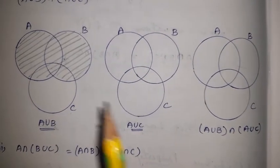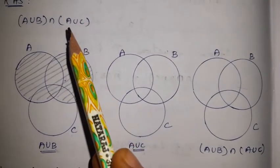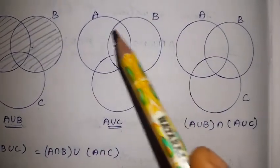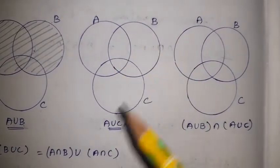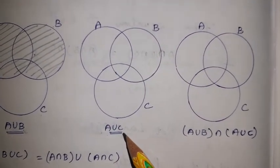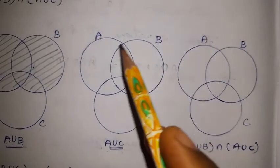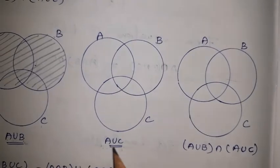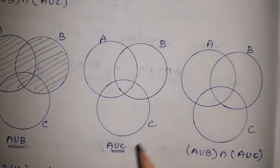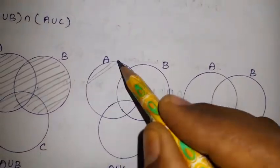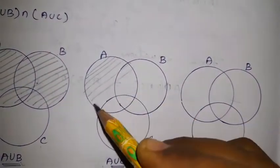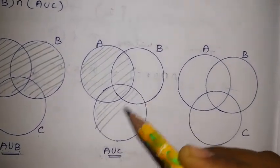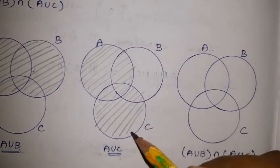For the right hand side, the next second bracket is A union C. Using the same three circles — A, B, C — we now consider A and C, leaving B aside. We mark A and C together for the union. A and C are marked, and B is not shaded. This gives the second diagram of the right hand side.